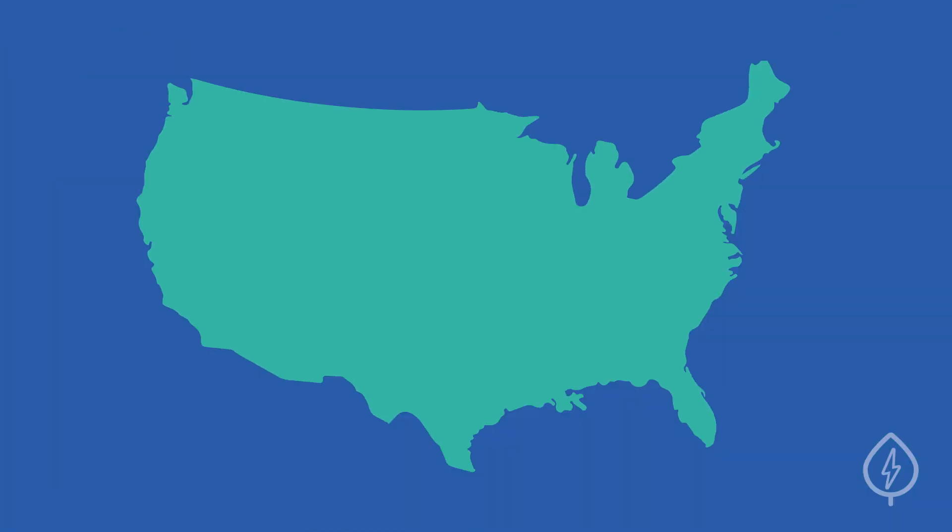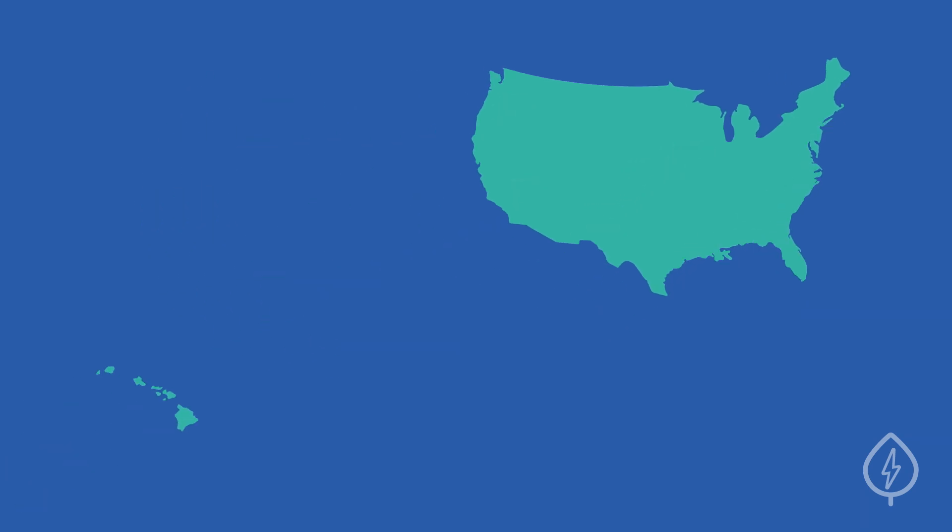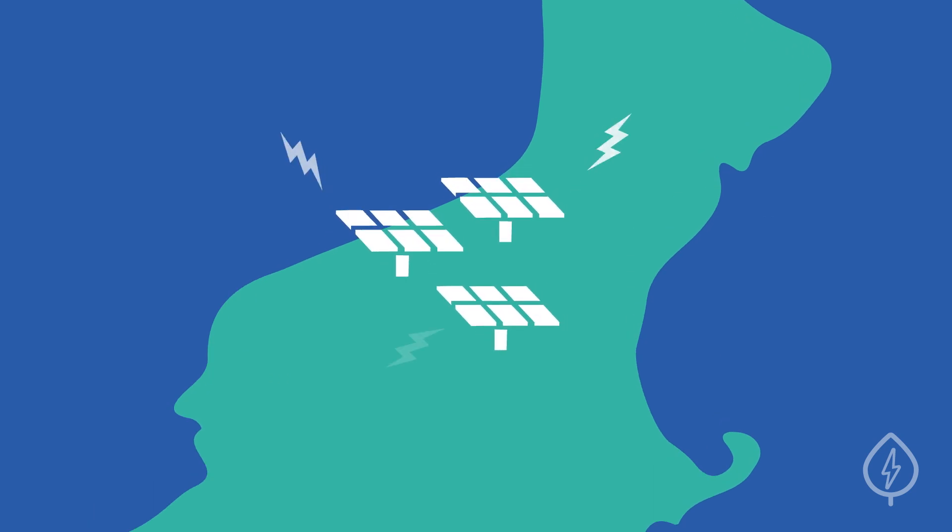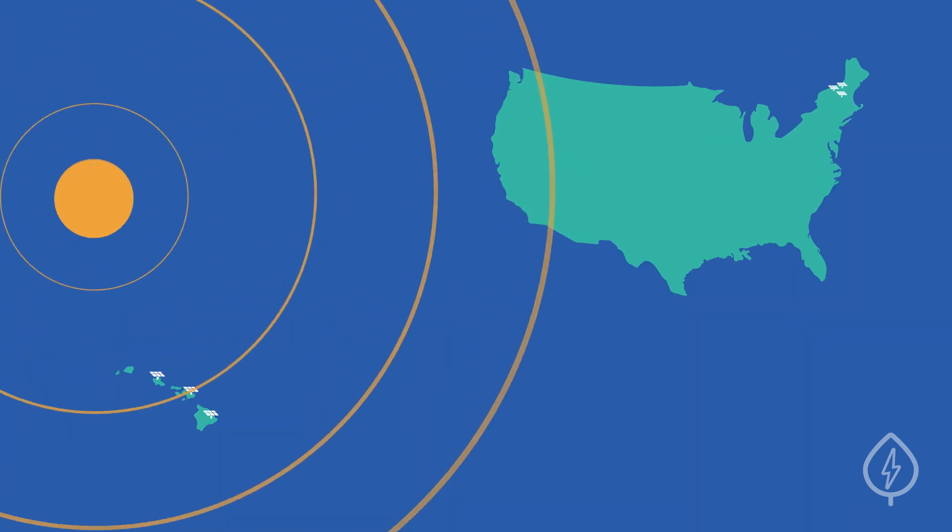Your location is another factor. Solar panels produce different amounts of electricity depending on their geographic location. For example, if you install solar panels in Hawaii, you'll produce more electricity in a year than if you installed the same number of panels in Vermont, simply because Hawaii gets more sunshine.